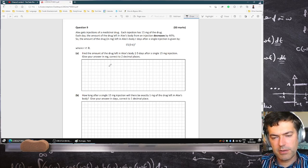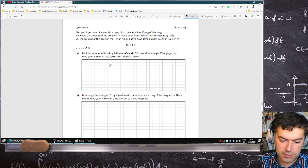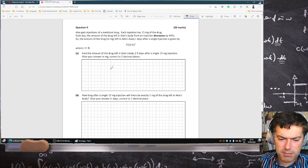So that's the formula for how much drug is in his body. Find the amount of drug left in Alex's body 2.5 days after the injection. 15 times 0.6 power 2.5. Two decimal places, 4.18 milligrams.